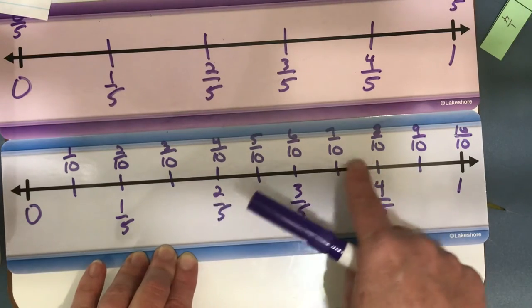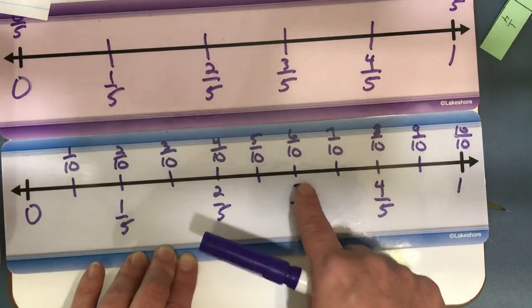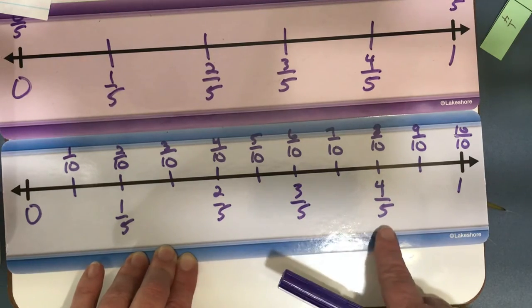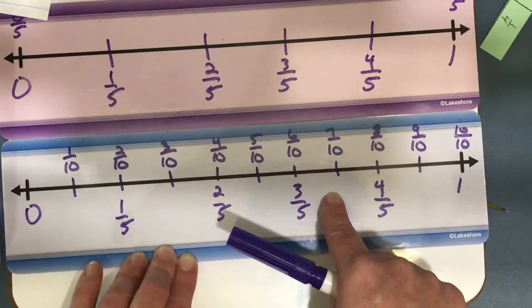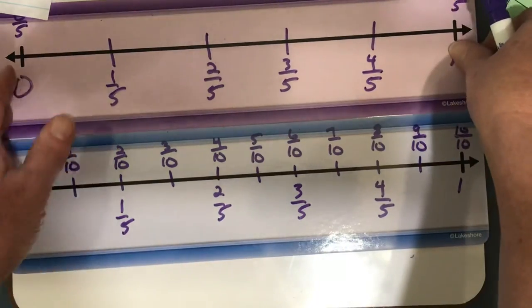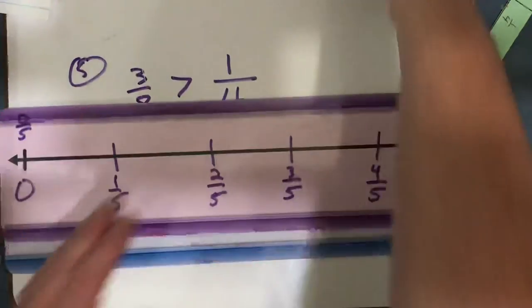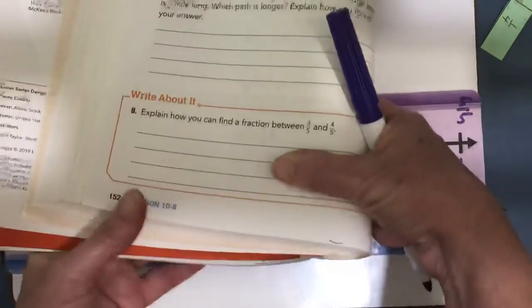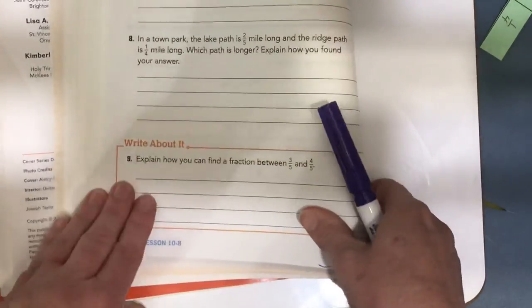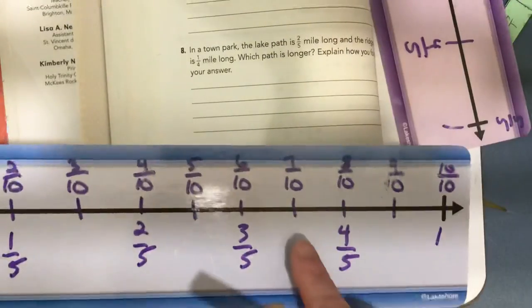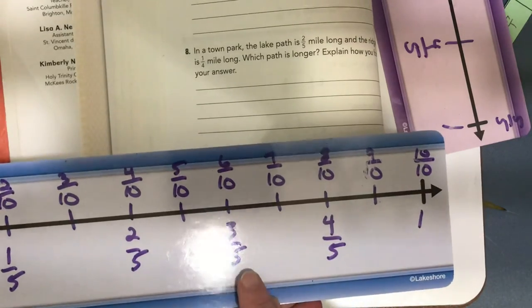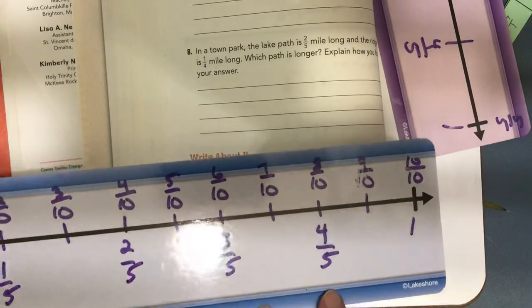7 tenths, 8 tenths, which is equivalent to 4 fifths. And you can see right in between 3 fifths and 4 fifths, I have 7 tenths. So, when you do number 9, you're going to have to say that I can make a number line showing fifths and tenths. And then I know that 7 tenths is in between 3 fifths and 4 fifths.